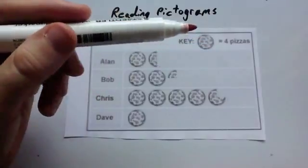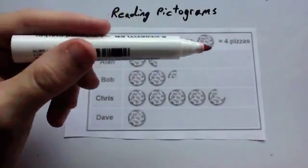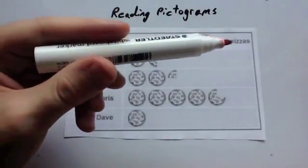So in this case, the key shows you that each pizza, a whole pizza picture, represents four pizzas eaten.